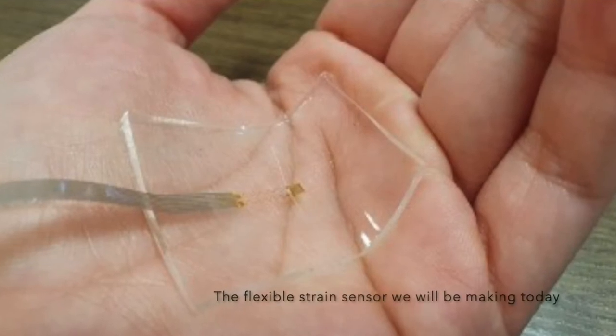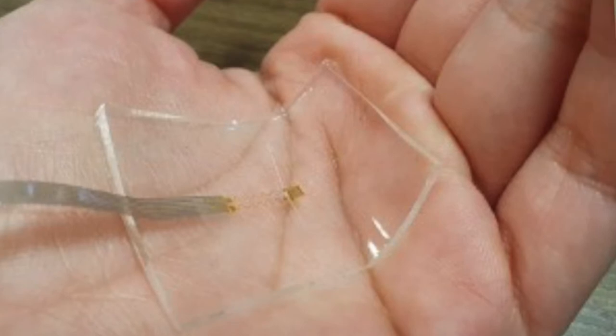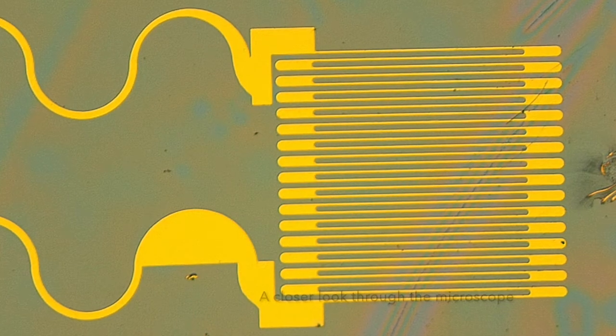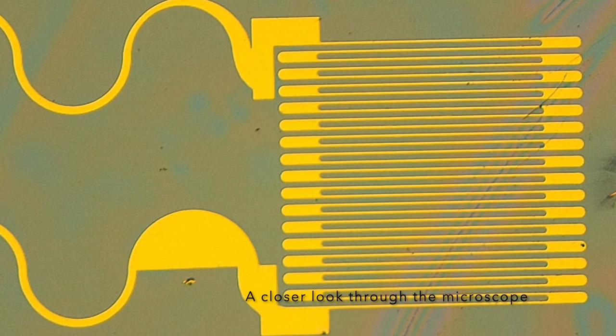Through this video, we're going to demonstrate the microfabrication roadmap for a PDMS-based strain sensor. We'll introduce a number of standard fabrication technologies including spin coating, photolithography, wet chemical etching, dry plasma etching and transfer printing.